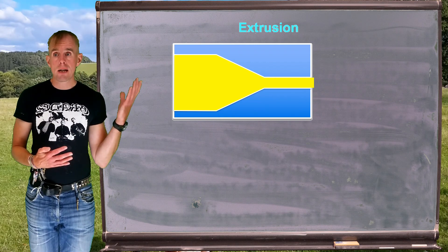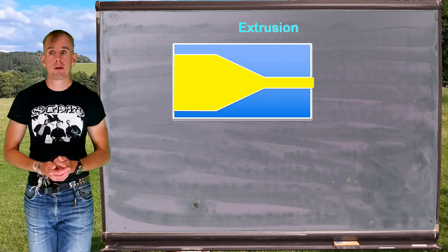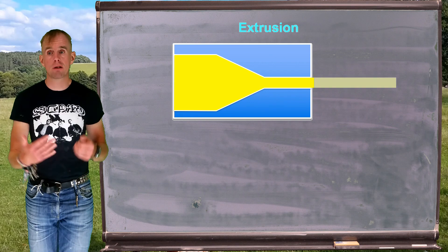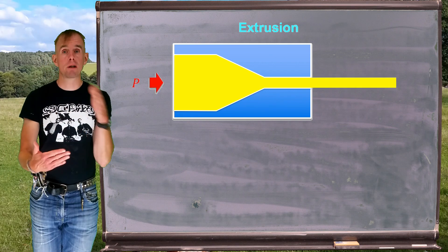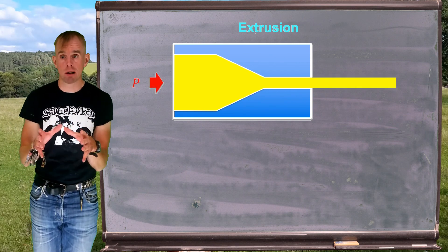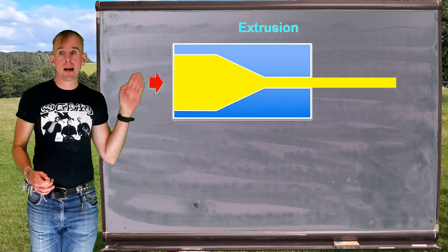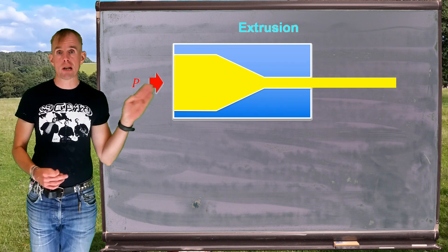What I do is I put a pressure on the fluid in the extruder, typically by pushing a ram or sometimes by rotating a screw and pumping material. And that pressure squeezes fluid out of a certain shape of an orifice.